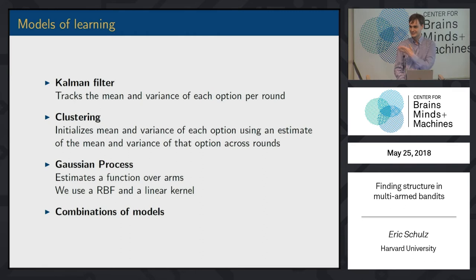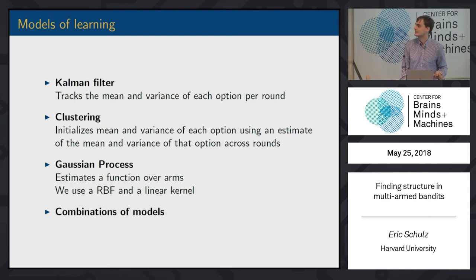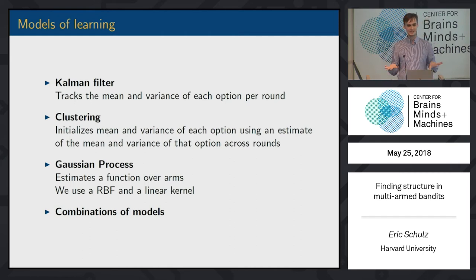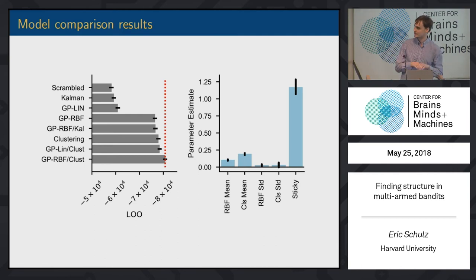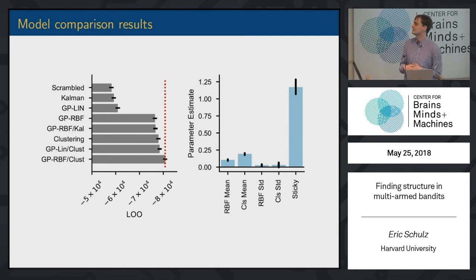We then used a bunch of models, using NIC's magic in model fitting combined with some of the stuff I had done before. The Kalman filter is pretty simple here, because it just tracks the mean and variance for every round. The clustering model learns over rounds, clustering means over different arms across rounds. And the Gaussian process — which is always my favorite — learns a function over the different arms that actually manages to do this sort of generalization. We also used different combinations of these models to see if people might have mixed strategies. Our results show that to explain participants' behavior quite well, with a good leave-one-out cross-validation error, we need a mixture of Gaussian processes — learning within a round, generalization within a round, and clustering to describe their behavior.